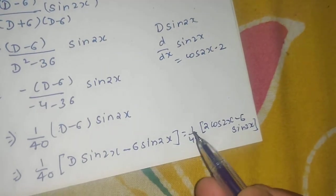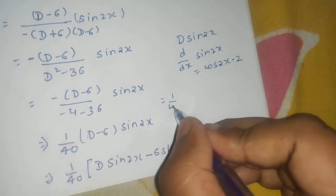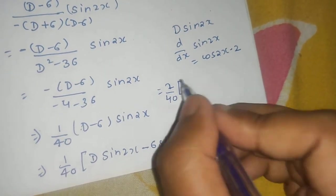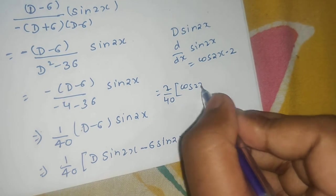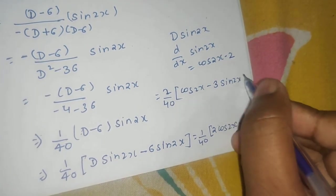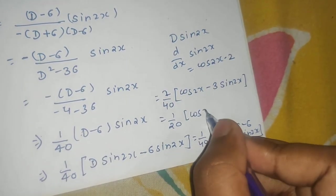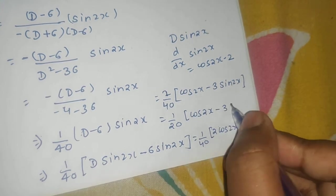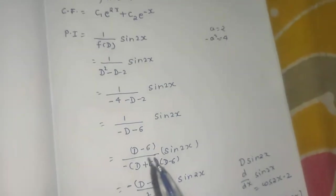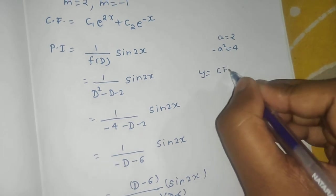Taking out a factor of 2, we get (1/40)·2·(cos(2x) - 3sin(2x)), which simplifies to (1/20)(cos(2x) - 3sin(2x)). This is our particular integral.